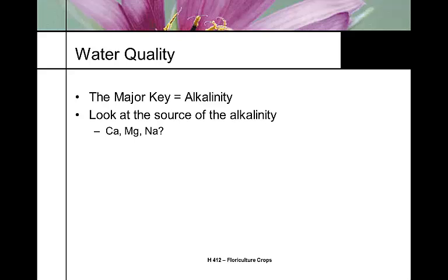Calcium and magnesium are essential elements — they are secondary macronutrients, essential for plant growth. Sodium, on the other hand, has nothing to do with plant growth — it is not an essential element. Sodium can replace potassium in plants, but it's actually a different molecule and disrupts osmotic balance because sodium has higher activity than potassium, making it tend to be toxic to plants. Some plants can tolerate higher levels of sodium than others.